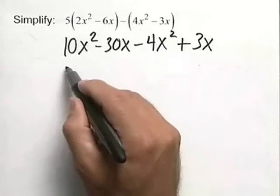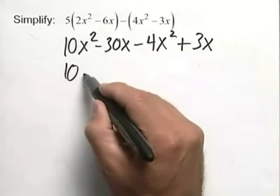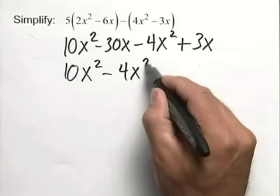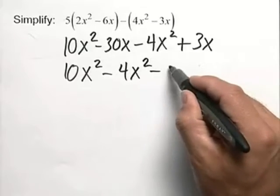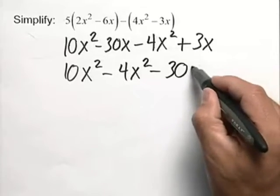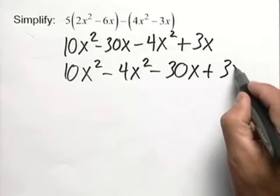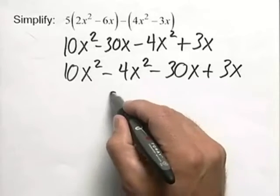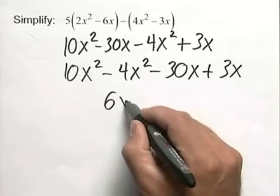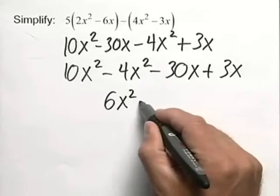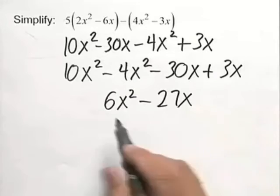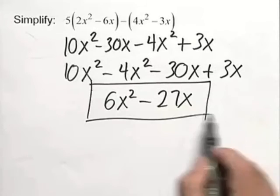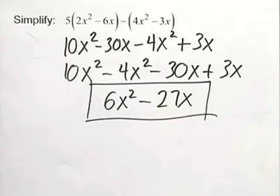Now we're going to gather our like terms here, a 10x squared minus 4x squared minus a 30x plus 3x. Combining our like terms, we obtain a 6x squared minus 27x. And since these are not like terms, this completes our problem.